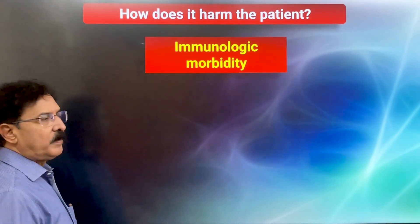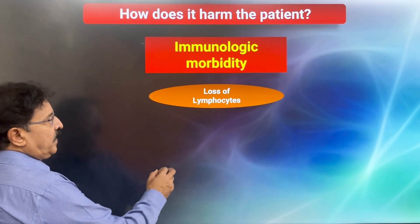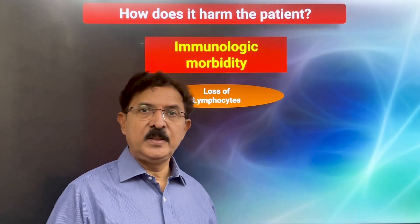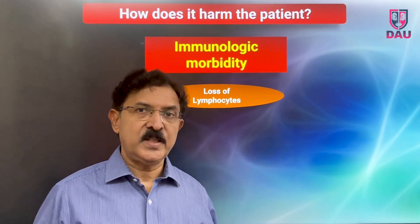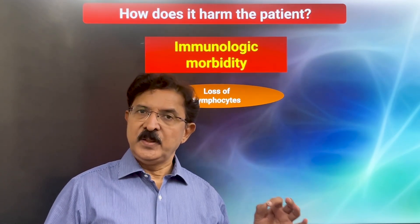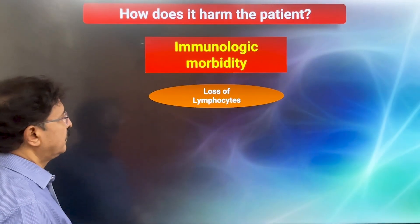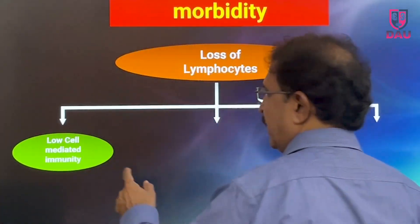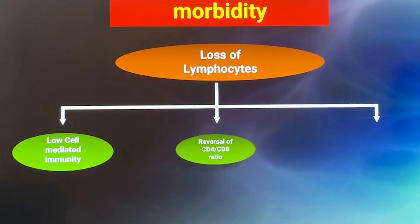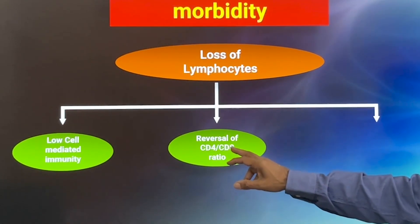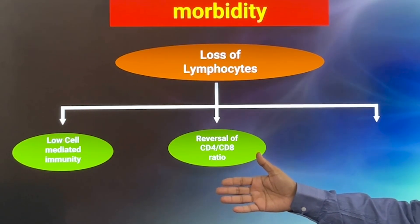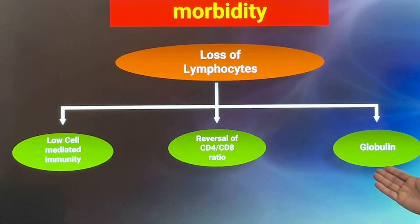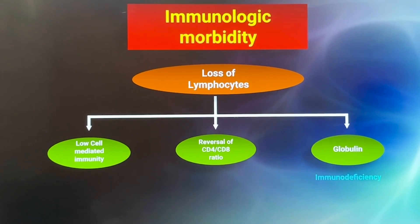The third morbidity is immunological. Patients are losing lymphocytes in urine, and chyluria is the only condition in urology where patients lose lymphocytes through the urine — making lymphocytes in urine a sine qua non for chyluria. Because of this lymphocyte loss, the patient gets low cell-mediated immunity. We have also seen reversal of the CD4 to CD8 ratio — similar to what is seen in AIDS. Combined with the loss of globulins, patients develop a state of immunodeficiency.